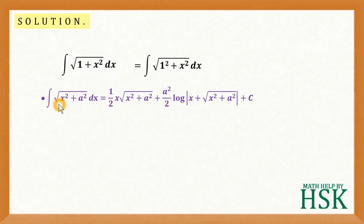This expression is in the form of this formula: that integration of square root of x square plus a square dx is equal to 1 by 2 x into square root of x square plus a square, plus a square upon 2 log of x plus square root of x square plus a square plus C. Now what I'm going to do is I'm going to apply this formula.